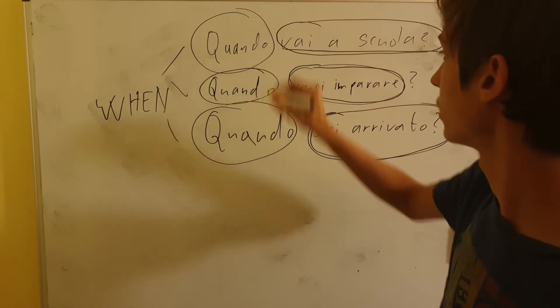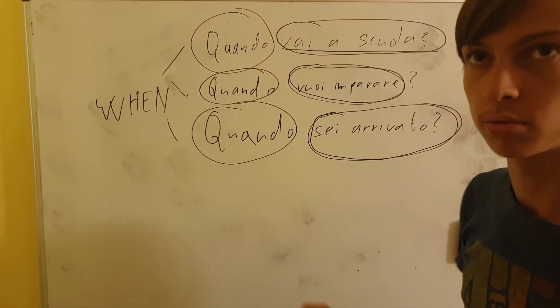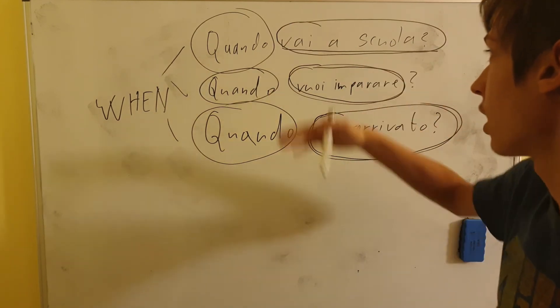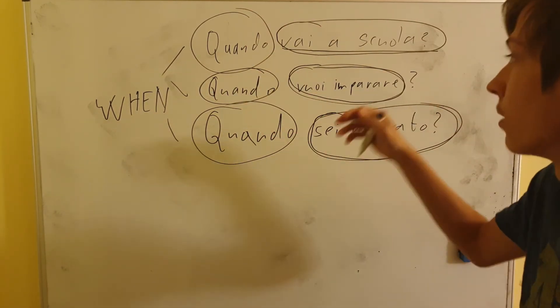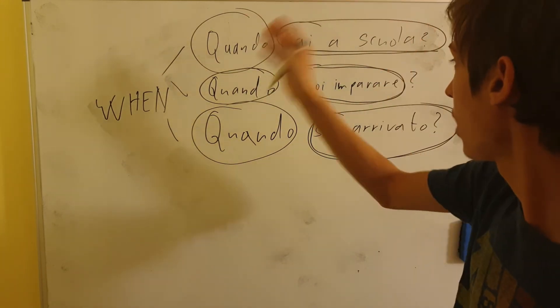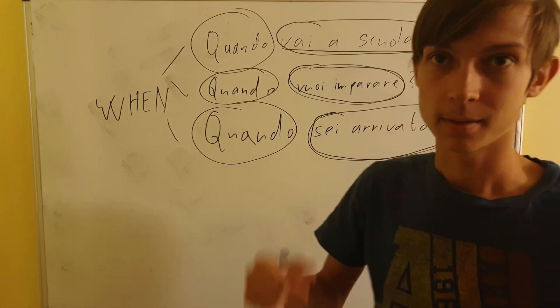You are going to school is this thing. Quando in each case in the beginning, you see it works just fine and it just means when are you going to school, when do you want to learn, and when did you arrive? When have you arrived? That's it.